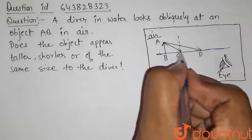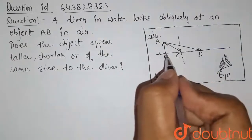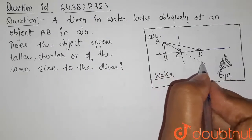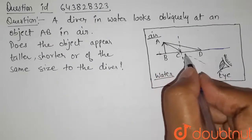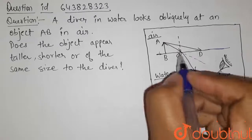So here the ray is going from rarer medium to denser medium, so this ray will converge towards the normal. Suppose this is the actual path, then it will converge towards the normal. So this is the path after refraction.